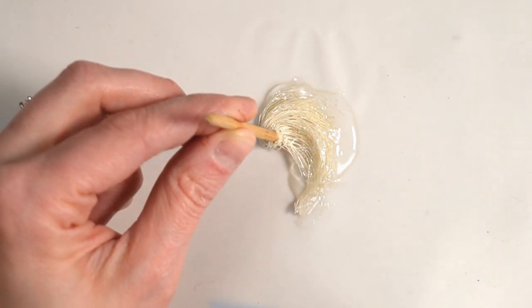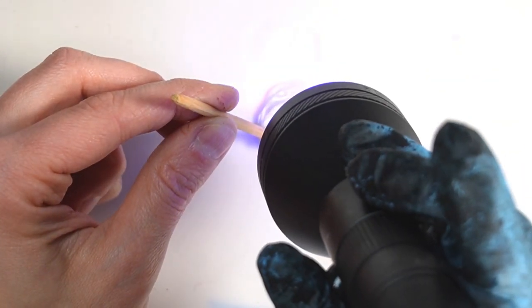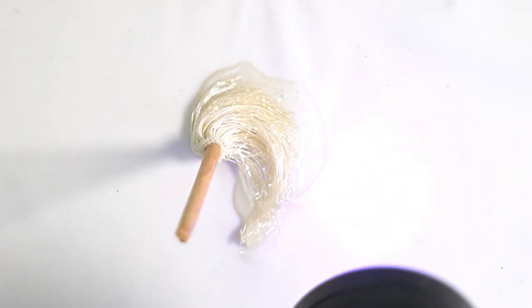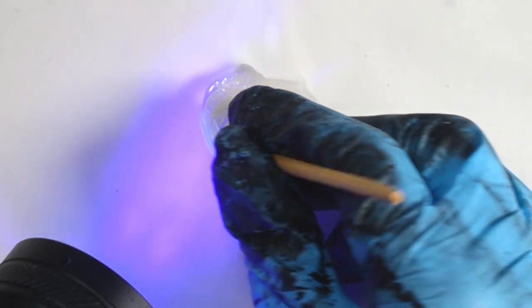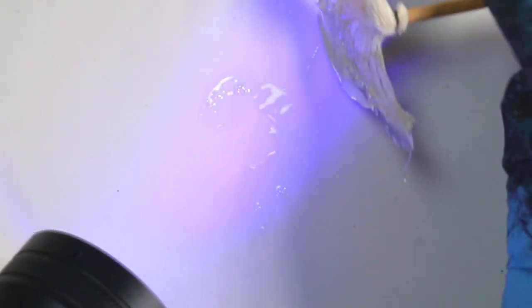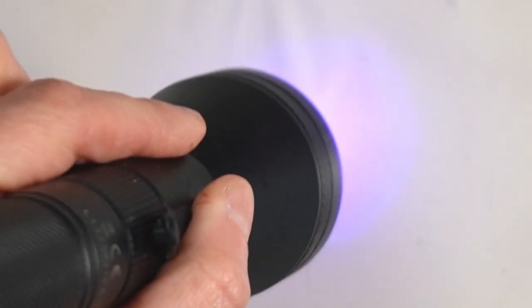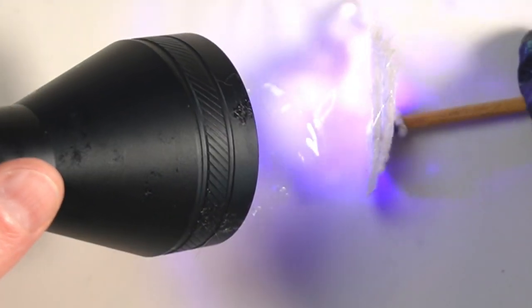To finish it off I added a bit more UV resin around the back and it's important to also cure the underside because there will be areas that the flashlight didn't reach and UV resin is toxic so before you touch it or do anything make sure it's entirely cured.